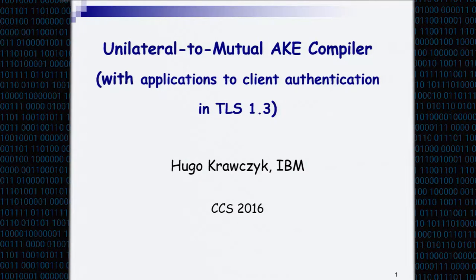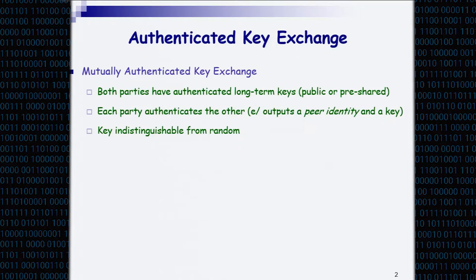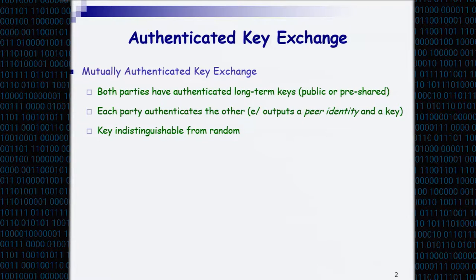This is a unilateral to mutual authenticated key exchange compiler with motivation and applications to client authentication in TLS 1.3. So in authenticated key exchange, the traditional case of mutual authentication: we have two parties that want to share a key. They have some long-term keys, which can be public or symmetric shared keys, and each party authenticates to the other, where at the end they output a key and the identity of the peer with whom they think they are talking to.